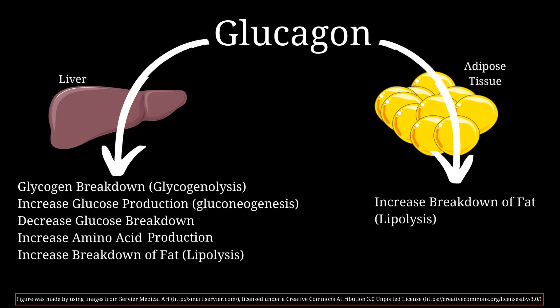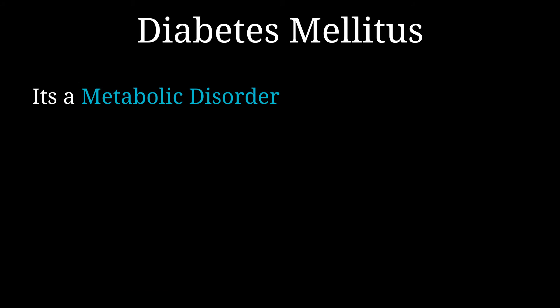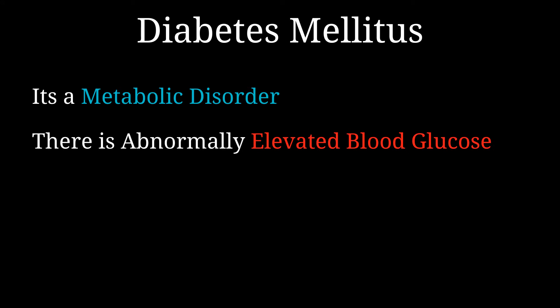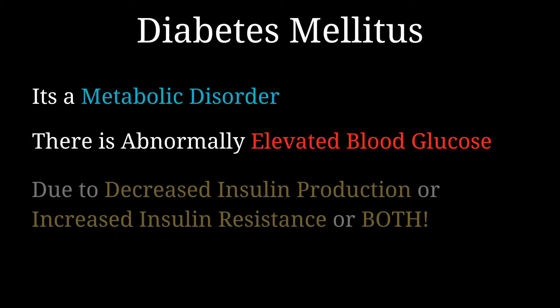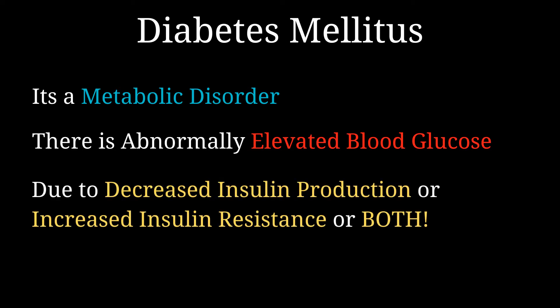Now that we know the functions of insulin and glucagon, let's discuss diabetes mellitus. Diabetes mellitus is a metabolic disorder characterized by abnormally elevated blood glucose levels. In this disease the body loses its ability to regulate blood glucose. This can be due to decreased insulin production — where the pancreas don't produce enough insulin — or due to increased insulin resistance, where insulin is produced but the body has decreased sensitivity to it. Sometimes the cause is a mixture of both.